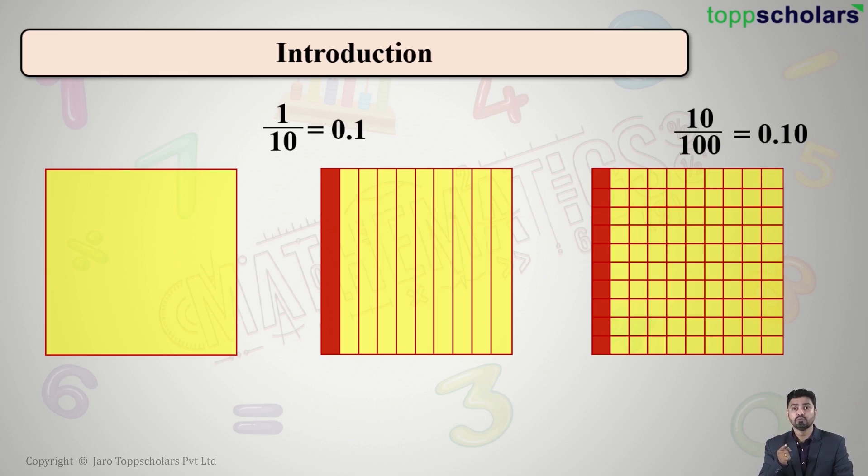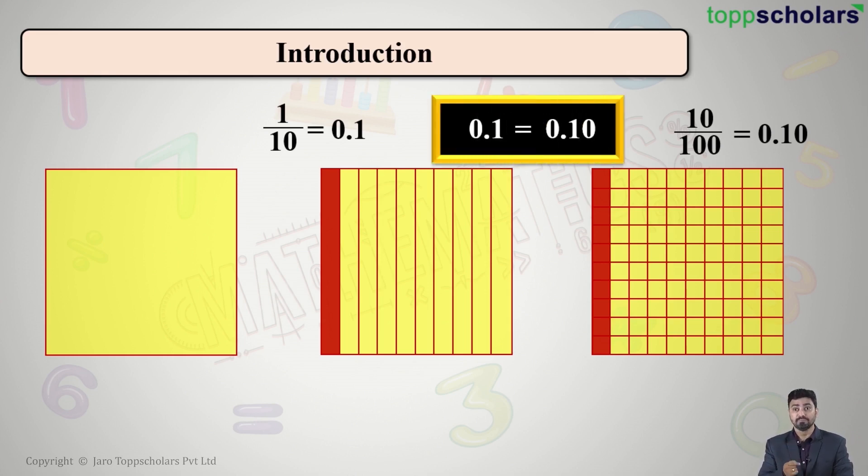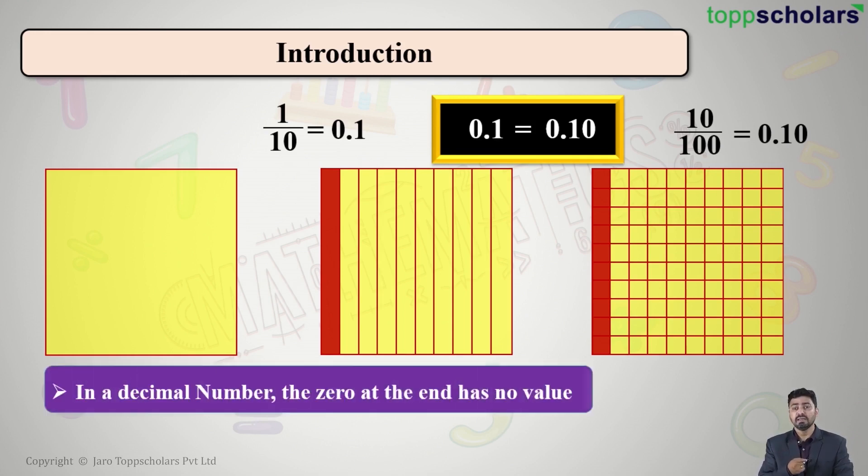Now both the decimal fractions are equal, that is 0.1 is equal to 0.10. What does that mean? That means that in a decimal number, the 0 which is at the extreme end, that is extreme right-hand side, has no value.